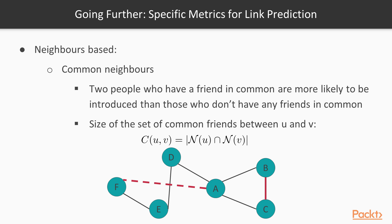The common neighbors approach translates the fact that two nodes, U and V, are more likely to be connected if they already have common neighbors. For instance, B and C have a common neighbor A, so they are more likely to be connected than F and A that do not have any direct common neighbors.